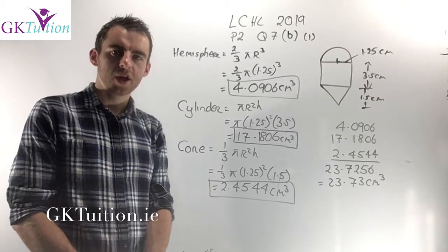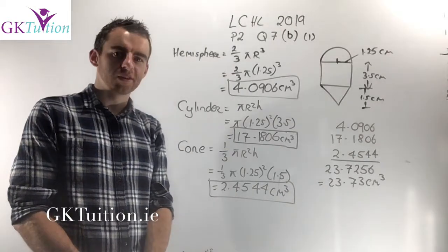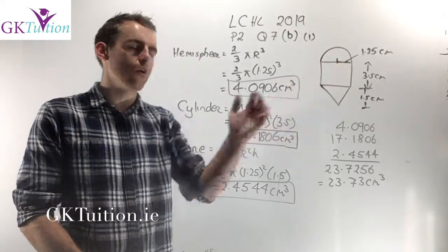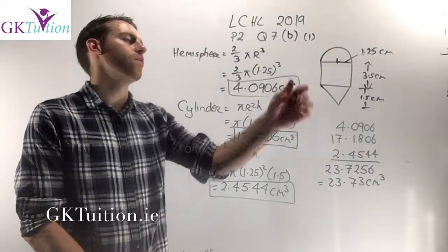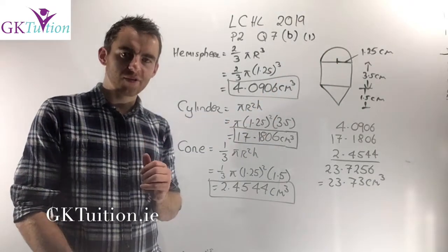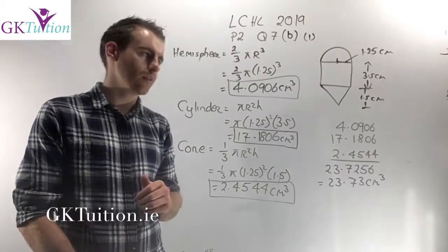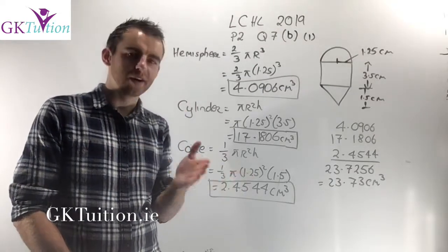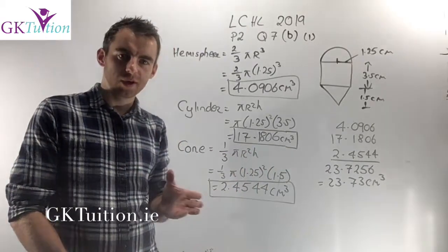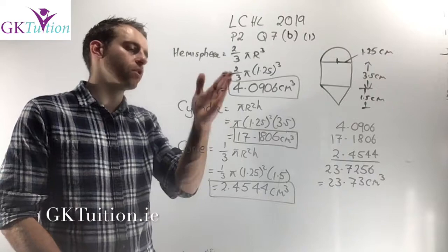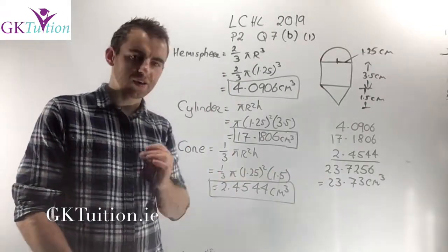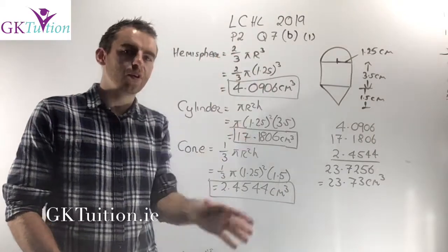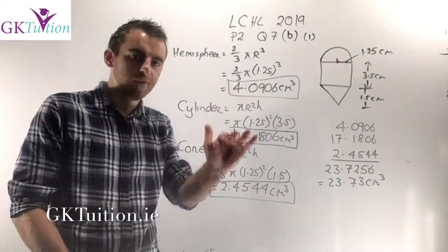In part B1 we're dealing with a sand timer. The upper half is full of sand, and its shape consists of a hemisphere, a cylinder, and a cone. We need to find the total volume of sand, leaving the answer in centimetres cubed to two decimal places. Be very careful about rounding — keep each individual volume to four or five decimal places before adding.